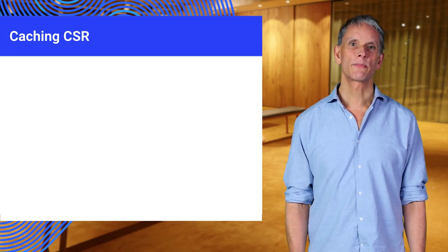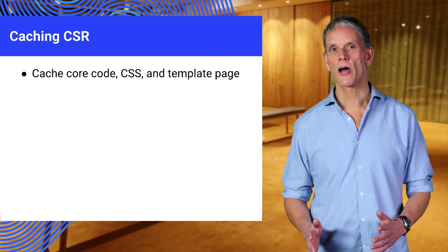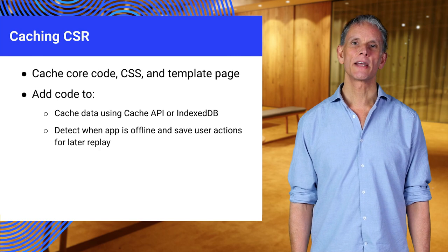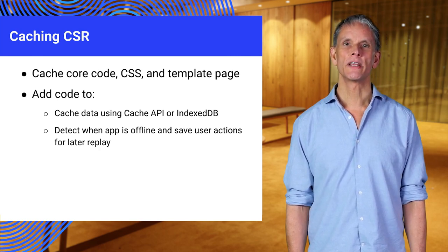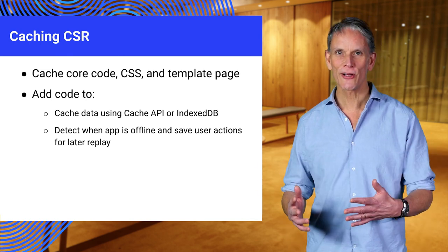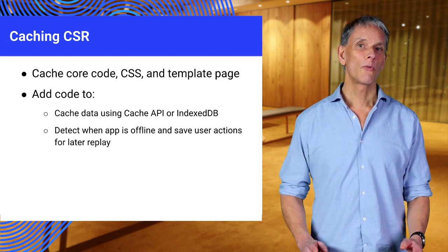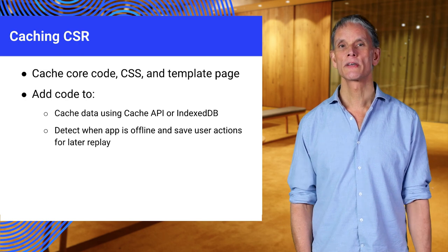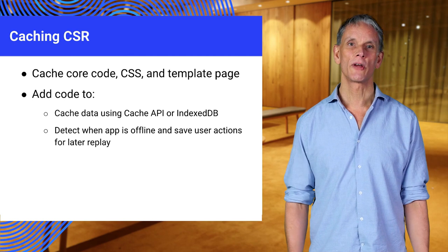Caching client-rendered apps is also fairly simple. Single page apps have a core that always lives on the client, so cache that. But they also depend on dynamic data, so you need to add code to handle that. The general idea is that things with a URL go in the cache and non-URL data goes in the database. One nice feature is to detect when the app is offline and remember user actions — for example, you could let the user build a shopping cart while offline and send it when they're online.